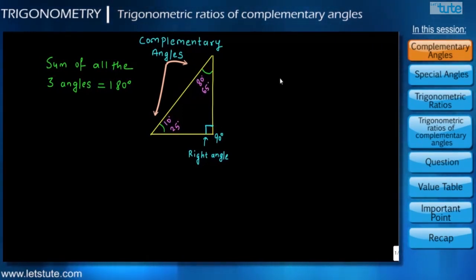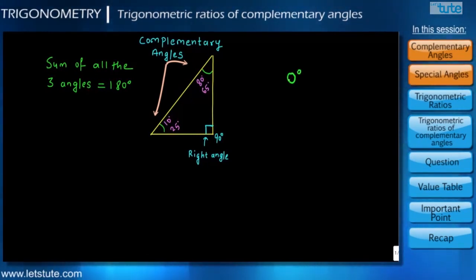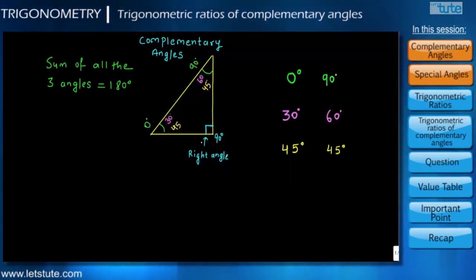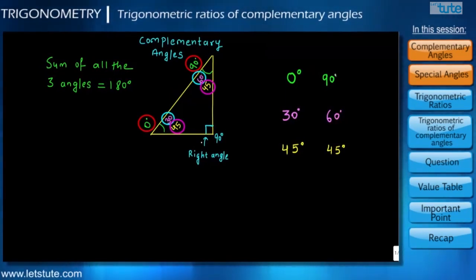In trigonometry we have some special angles: 0 degrees, 30, 45, 60, and 90 degrees. These pairs of angles are called complementary angles.